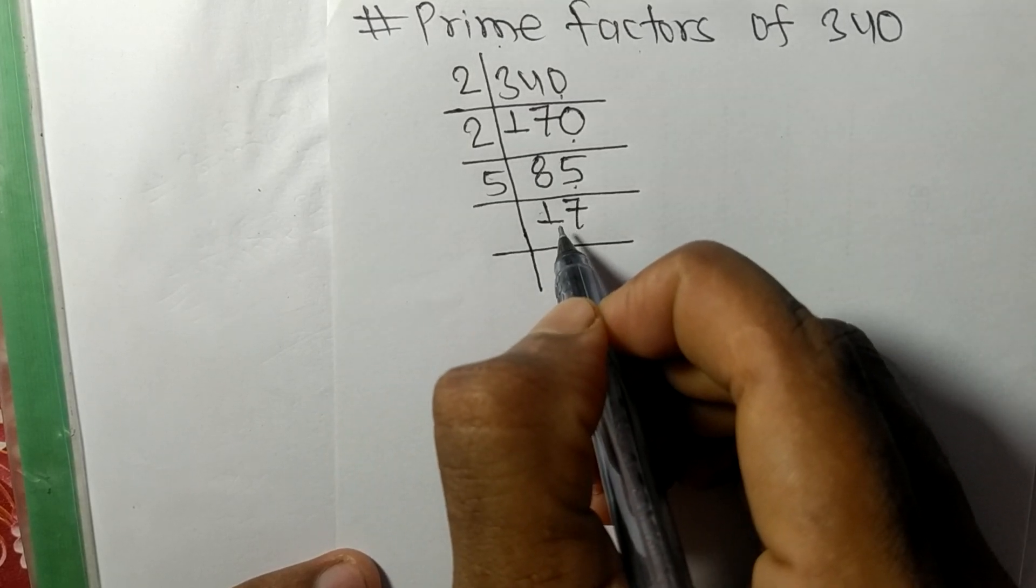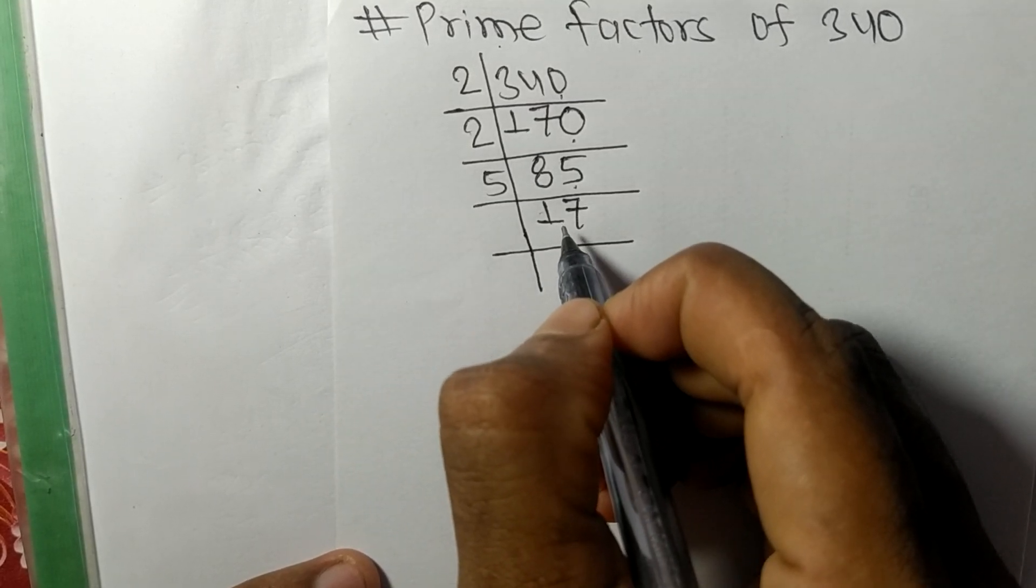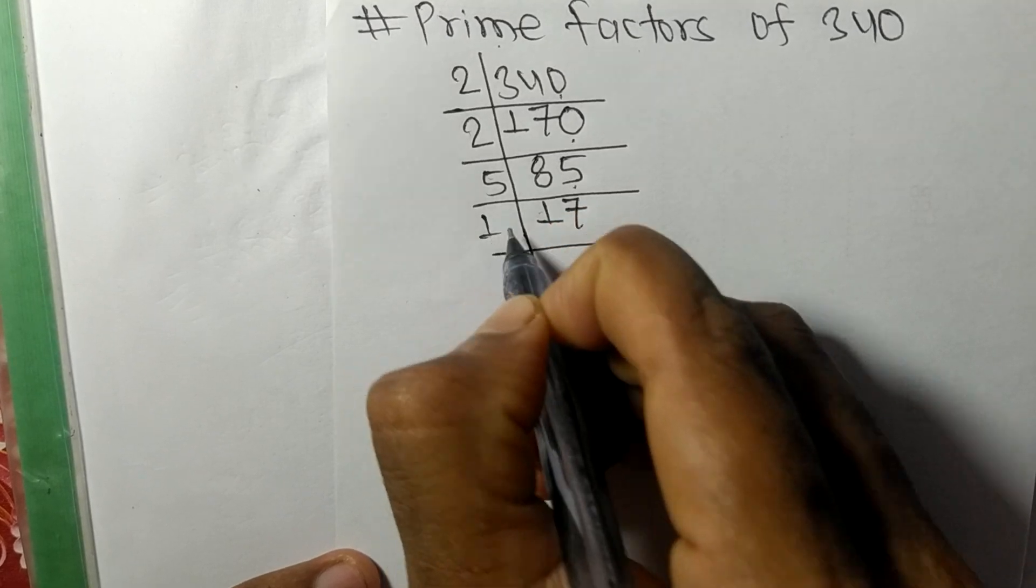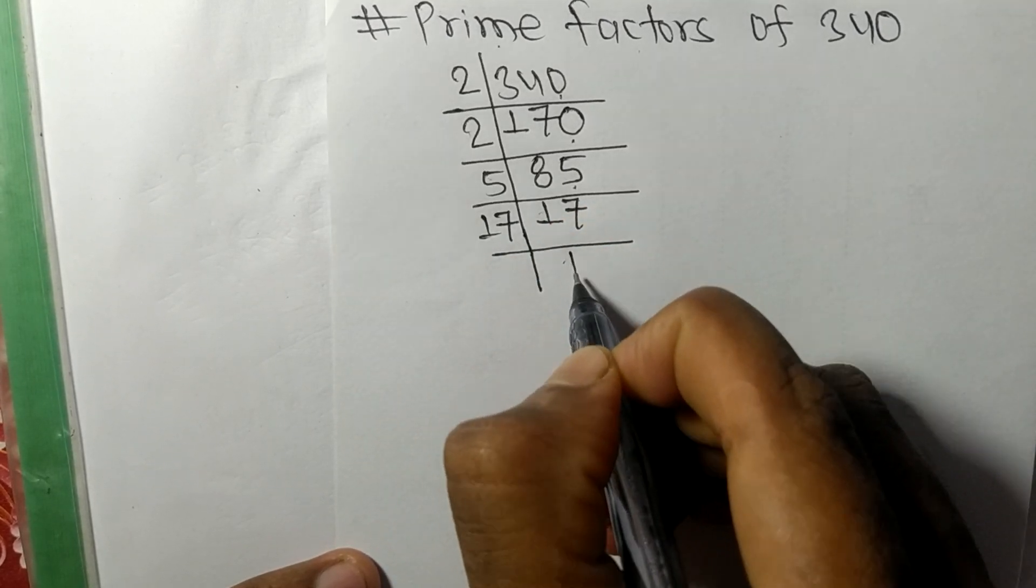Now we got 17, which is our prime number, so it is divisible by 17 itself, and we get here 1.